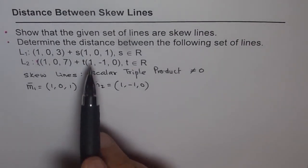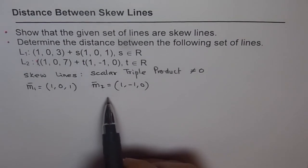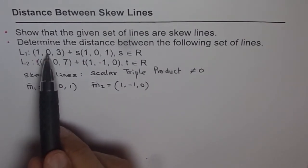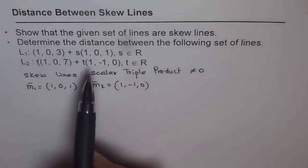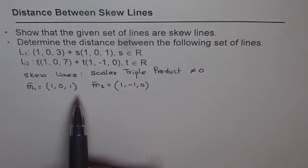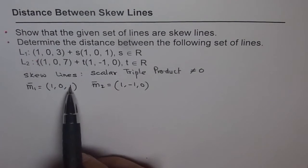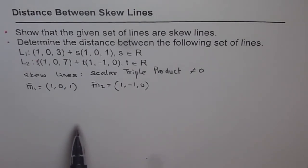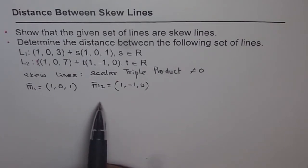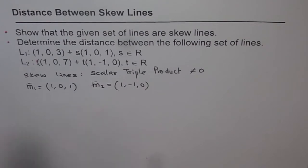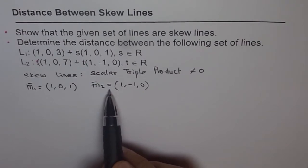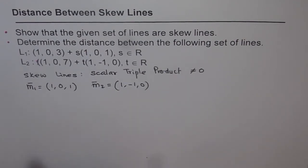Let's say these two line directions are on this page. If we cross them, we will get a normal vector which will be normal to the paper. Now, if I just join the two given points on these lines and assume they are coplanar — in the same plane — then that connecting line will lie on the paper. Therefore, the dot product of that line with the cross product of M1 and M2, which is normal to the paper, will form 90 degrees, so the dot product should be 0. But if they are not in the same plane, meaning they are in parallel planes and do not intersect, then that product is not equal to 0.